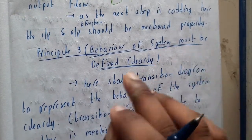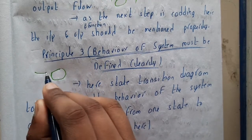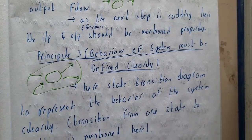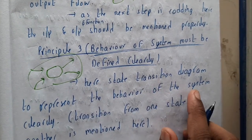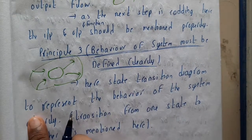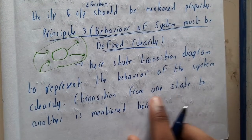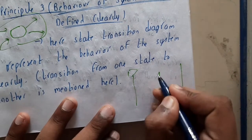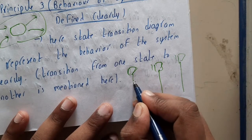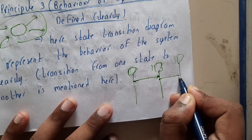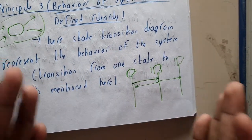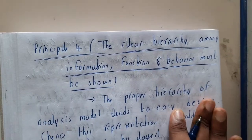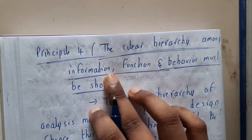The third principle: the behavior of the system must be clear. A single function given one type of input might act one way, and given another type of input can act differently. These behaviors should also be mentioned clearly. State transition diagrams are used to represent the behavior of the system — transition from one state to another state is shown here. These diagrams show how you move from one stage to another stage based on events. Some books also call this a sequence diagram.